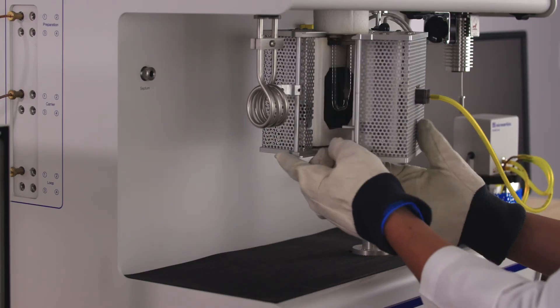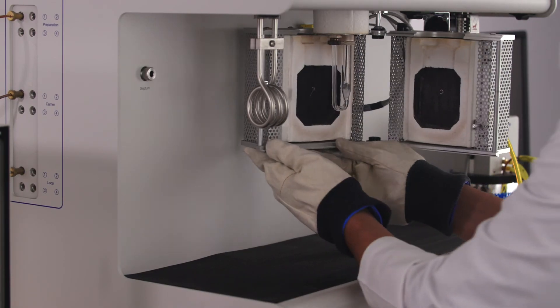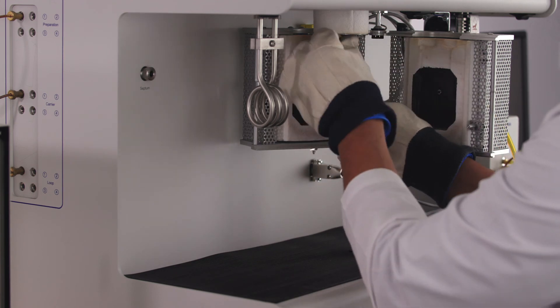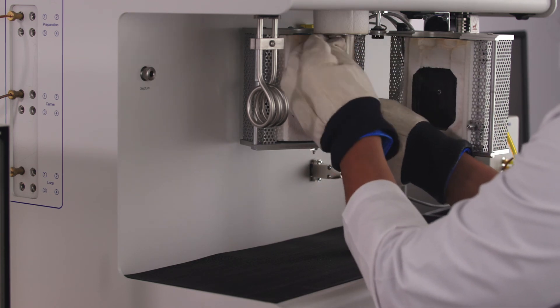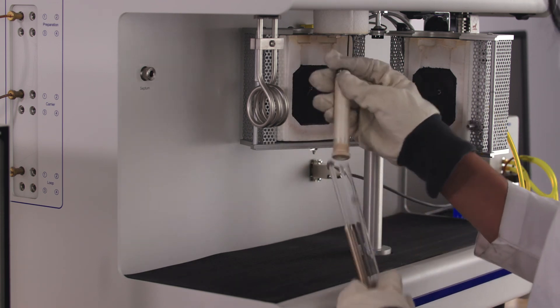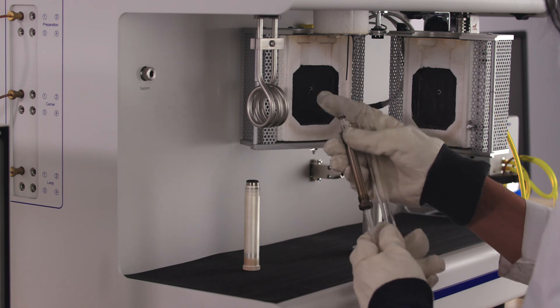After the analysis is completed, remove the sample tube with heat-resistant gloves. The sample port is kept at 110 degrees Celsius, so the sample tube will be very hot to touch. Carefully remove the sample tube from the furnace. Let the sample cool down for a few minutes.